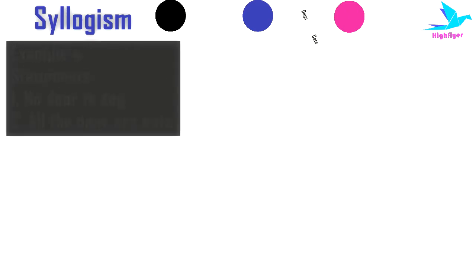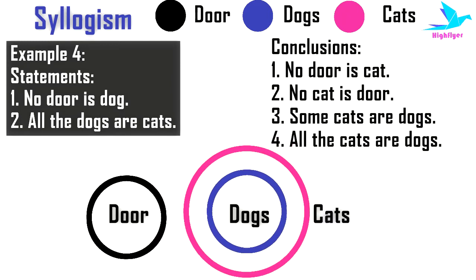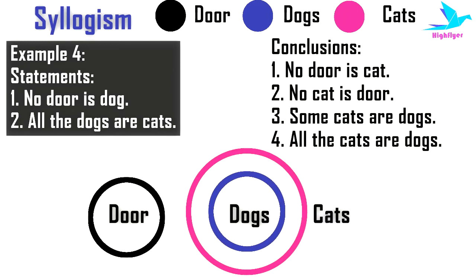Example 4. The statements are: No door is dog, and all dogs are cats. The conclusions are: 1. No door is cat. 2. No cat is door. 3. Some cats are dogs. 4. All cats are dogs. Black, blue, and magenta represent doors, dogs, and cats respectively. Since no door is dog, the circle for doors and the circle for dogs are completely separate with no relation. Since all dogs are cats, the circle for dogs comes entirely within a bigger circle representing cats.